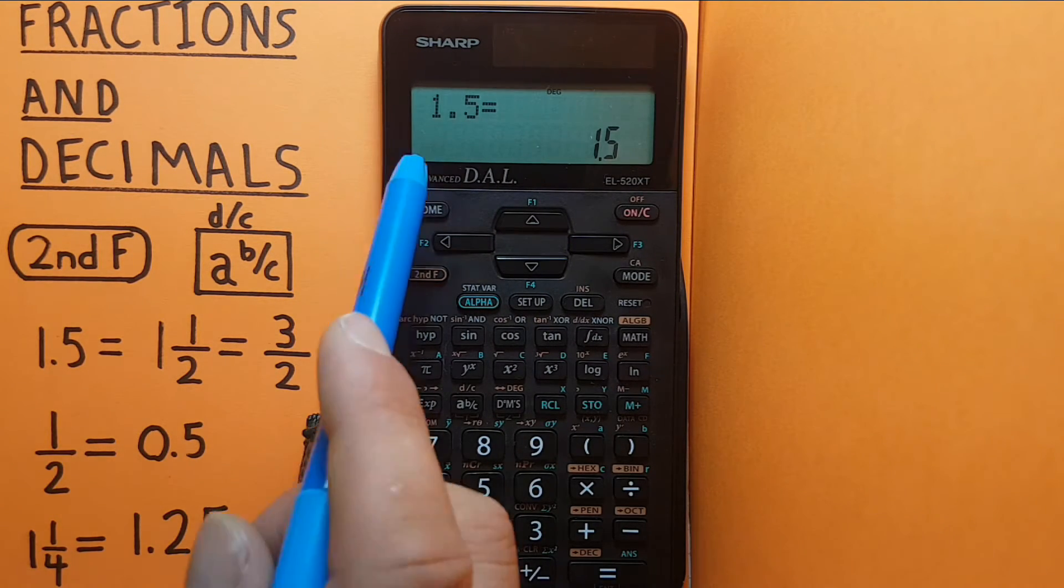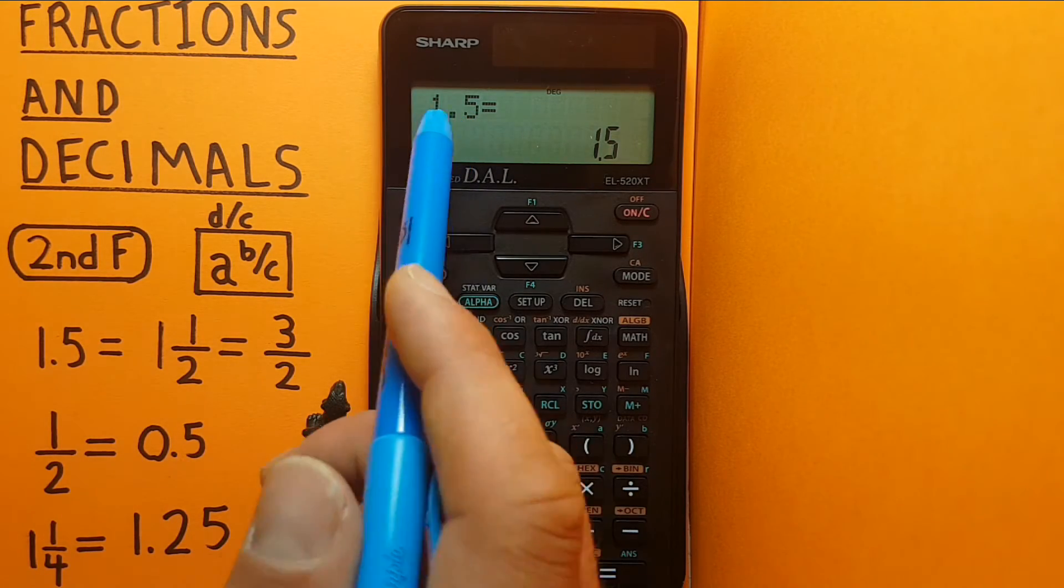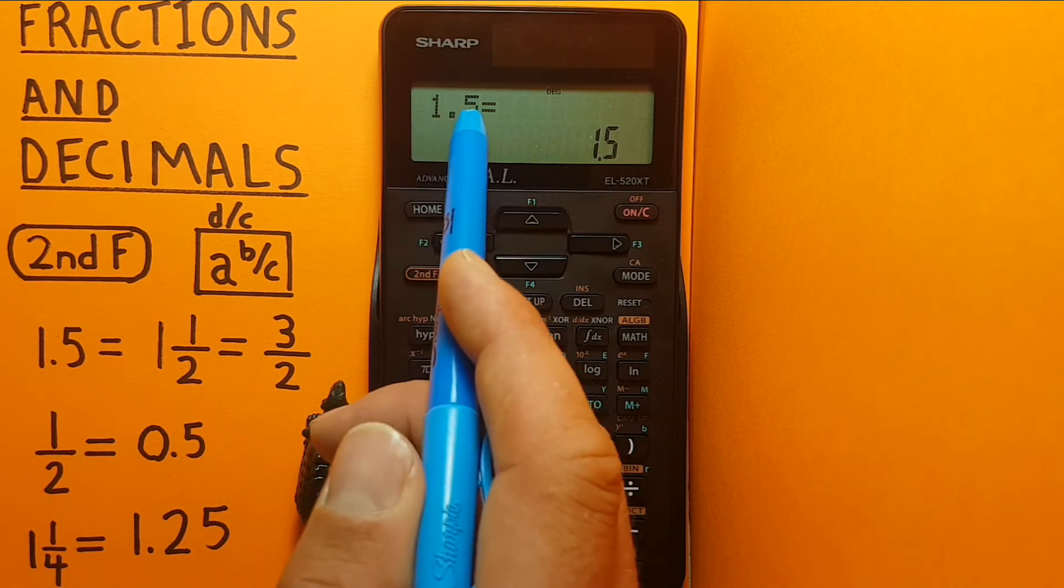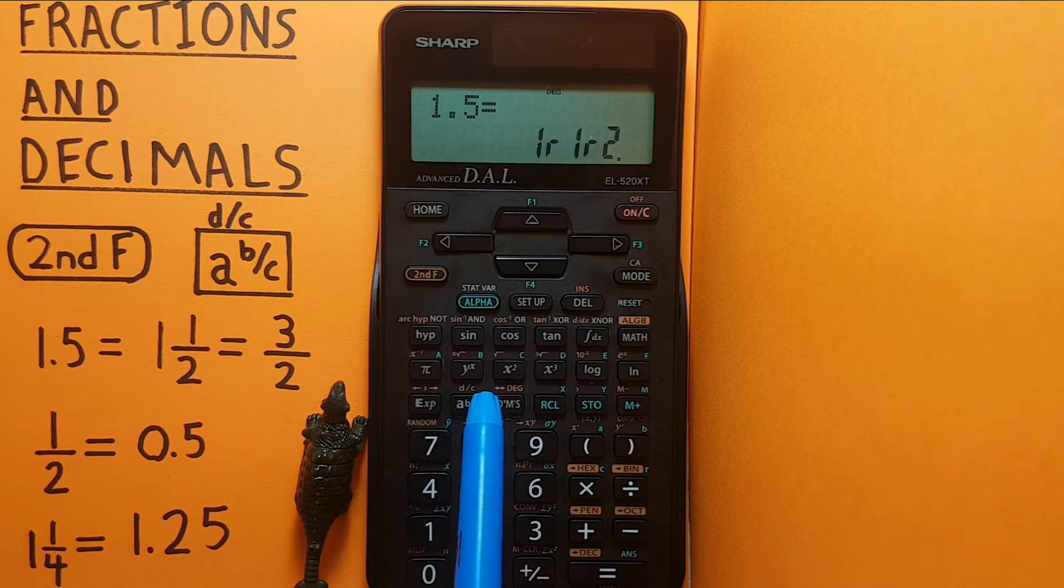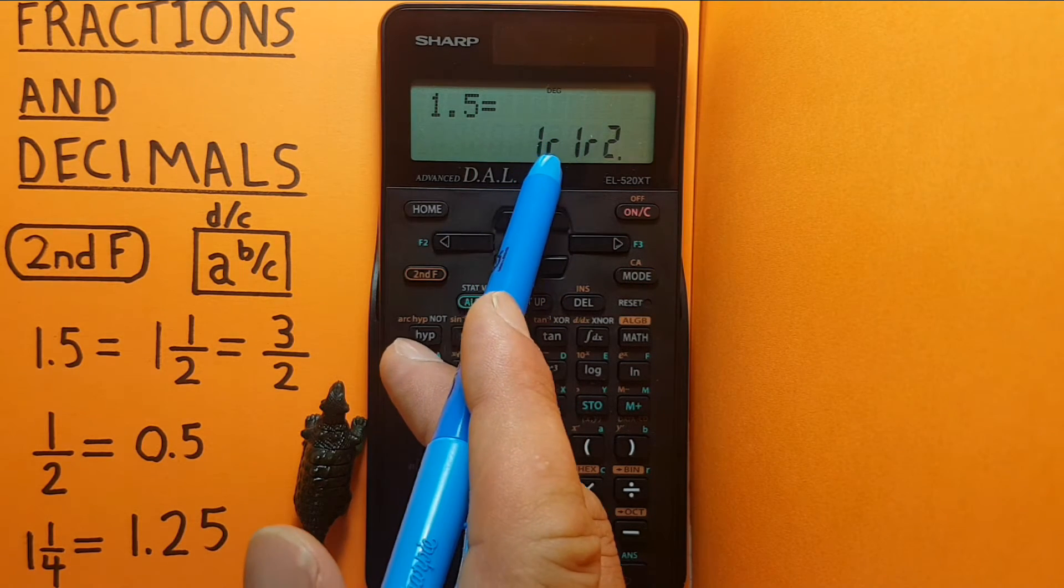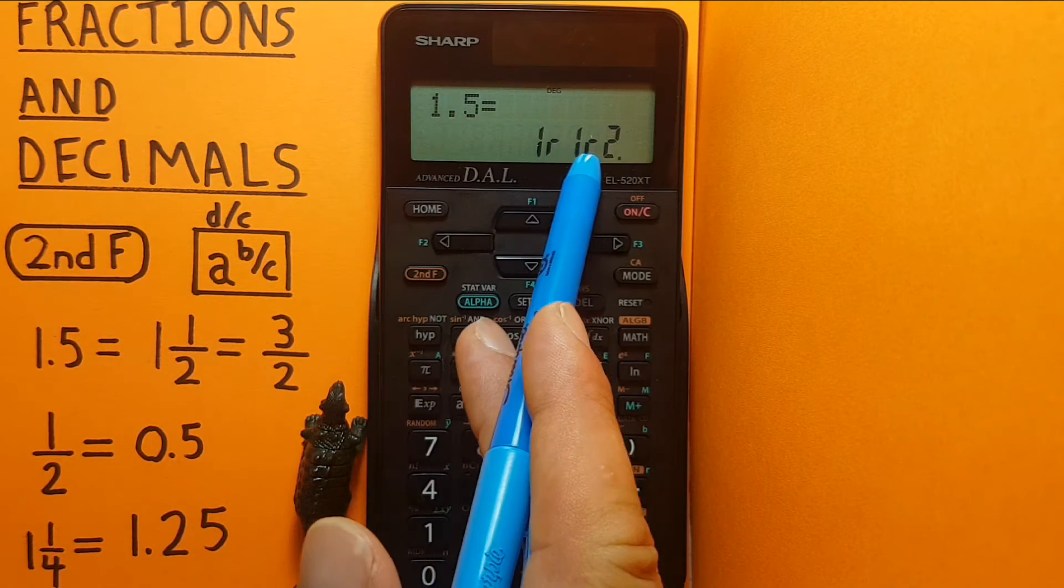Press equals so that our 1.5 or whatever decimal is on the top level, and then we press the a b over c key and it gives us this 1 r 1 r 2.